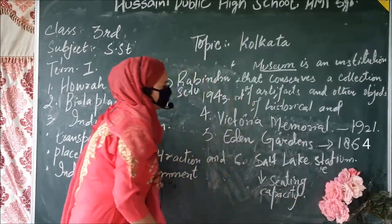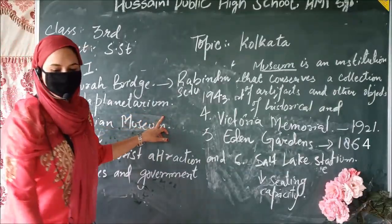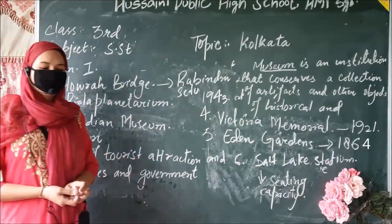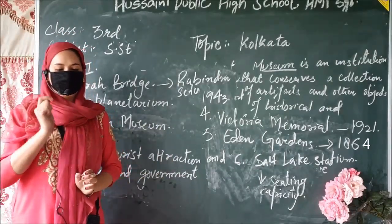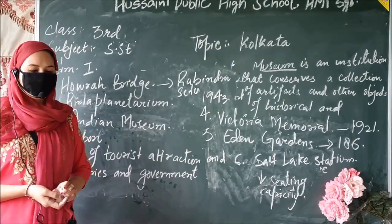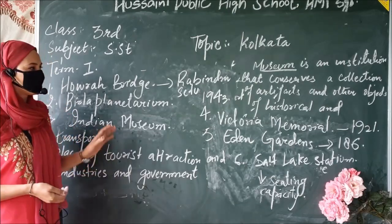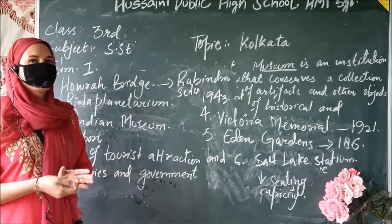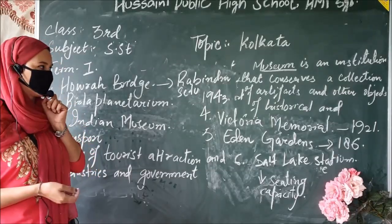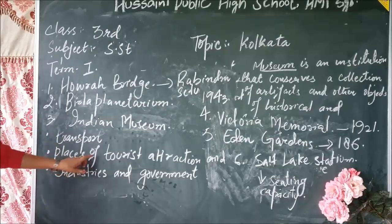There are other places of tourist attraction in and around Kolkata, including Fort William, Botanical Gardens, Alipore Zoo, Ramakrishna Mission, Birla Mandir, Dakshineswar Temple and Nakhoda Masjid. Kolkata has a number of palaces, due to which the city is sometimes referred to as the city of palaces. So this was a brief introduction about places of tourist attraction.